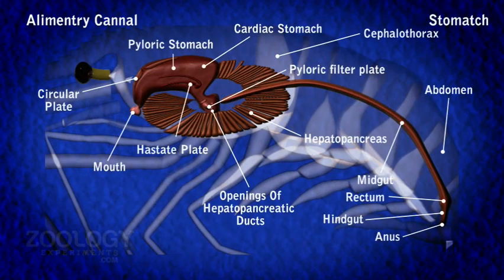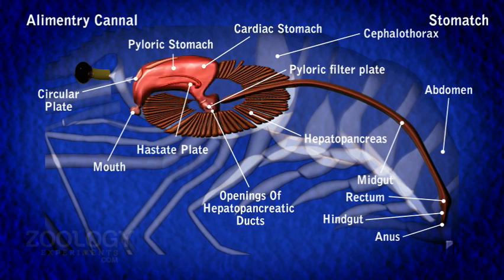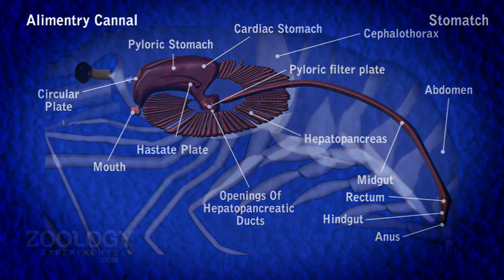Stomach. The stomach occupies most of the cephalothoracic cavity. It remains buried laterally, ventrally, and posteriorly in the hepatopancreas. The stomach of the prawn is thin-walled and double-chambered, consisting of two parts: a large anterior bag-like cardiac stomach and a much smaller posterior pyloric stomach.